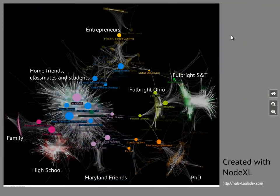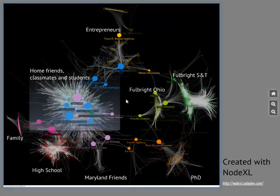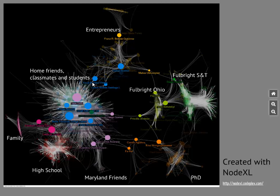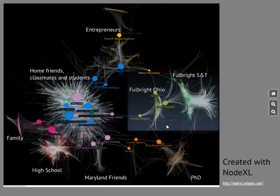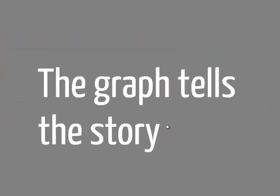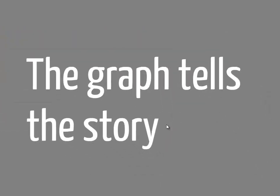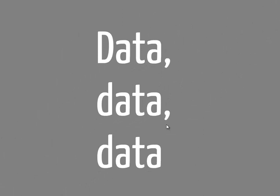Going back to the overall picture, you can see that this visualization is actually telling a lot about my life. You can identify some quite important people — for instance, here's an important connection between the entrepreneurial and home friend clusters. The graph is telling the story; there's a lot of information you can extract just by looking at it.